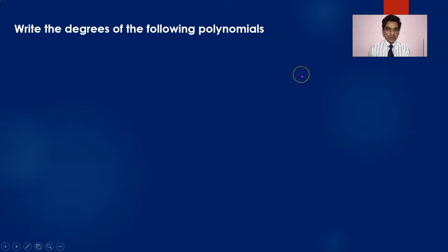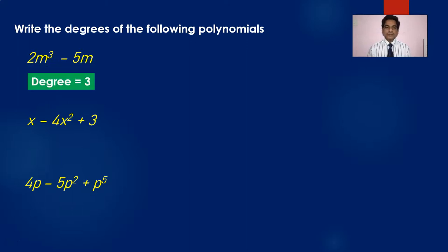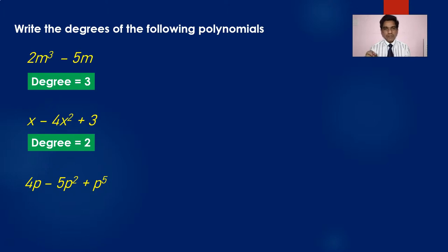Now let's practice. Write the degrees of the following polynomials: 2m³ minus 5m — variable m, highest exponent is 3, so degree is 3. x minus 4x² plus 3 — variable x, highest power is 2, so degree is 2. 4p minus 5p² plus p⁵ — variable p, highest exponent is 5, so degree is 5.